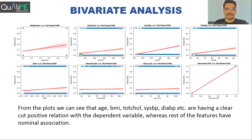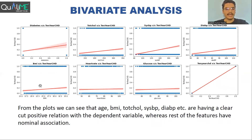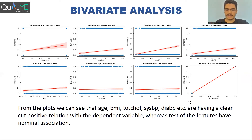Total cholesterol is also positively correlated with the target variable. Systolic BP and diastolic BP are also positively related. BMI is also positively correlated — if BMI is high, the person is obese, so obviously the risk of heart disease increases. Heart rate and glucose were also analyzed against the CHD target variable.